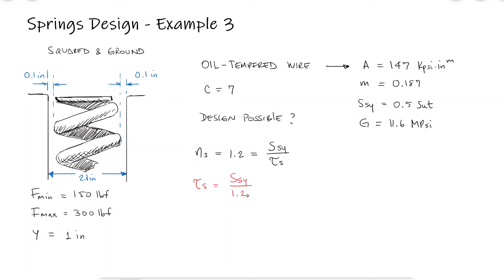Since the shearing yield strength is a function of the ultimate strength and the ultimate strength a function of the wire diameter, we'll find the wire diameter first.